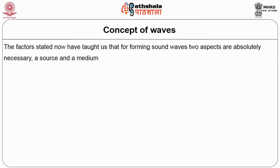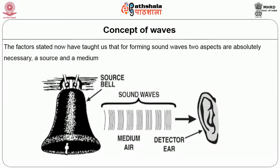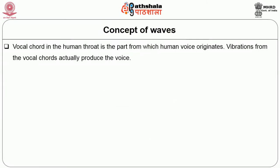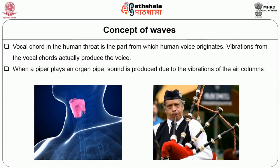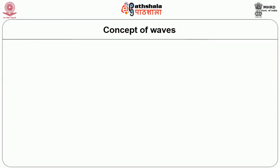The factors stated now have taught us that for forming sound waves two aspects are absolutely necessary: a source and a medium. The vocal chord in the human throat is the part from which human voice originates. Vibrations from the vocal chords actually produce the voice. When a piper plays an organ pipe, sound is produced due to the vibrations of the air columns. It is but natural that you get the doubt how sound waves move in air. To learn about the method of wave movement in air, understanding a few terms related to sound propagation will be helpful.